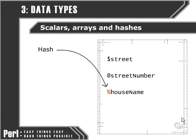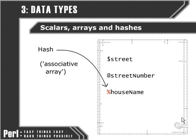A hash, on the other hand, is more similar to the names of houses within a street. Although there's more than one variable, they're not numerically ordered. There's no particular reason why 'The Laurels' should come before 'Bag End' — they're just arranged in a relatively arbitrary order within the street, or the hash, in which they're contained. You may also hear a hash called an associative array. So that's the basic difference between scalars, arrays, and hashes. In our next movie, we're going to take a look in more detail at what an array does.